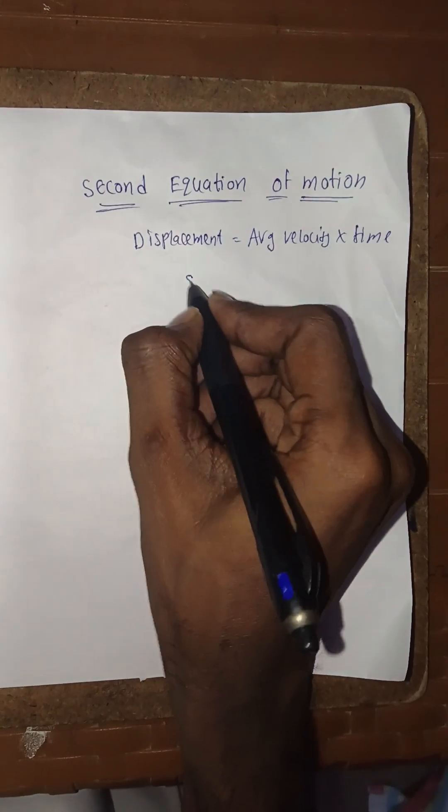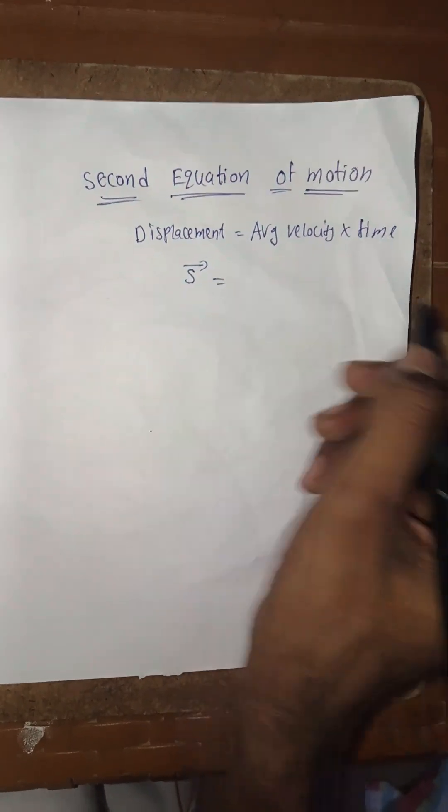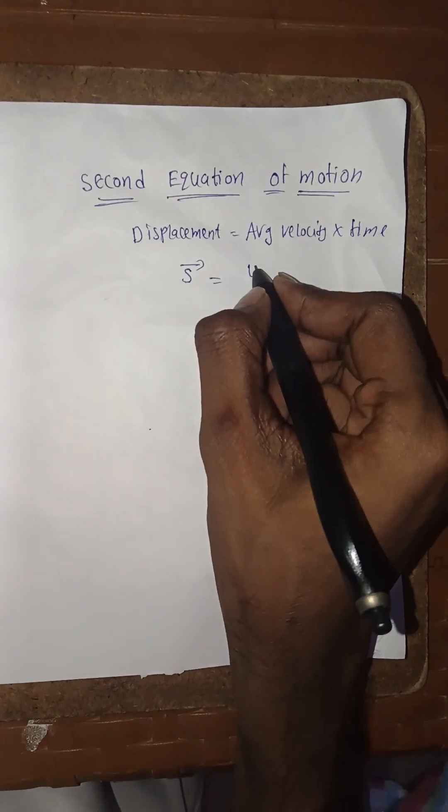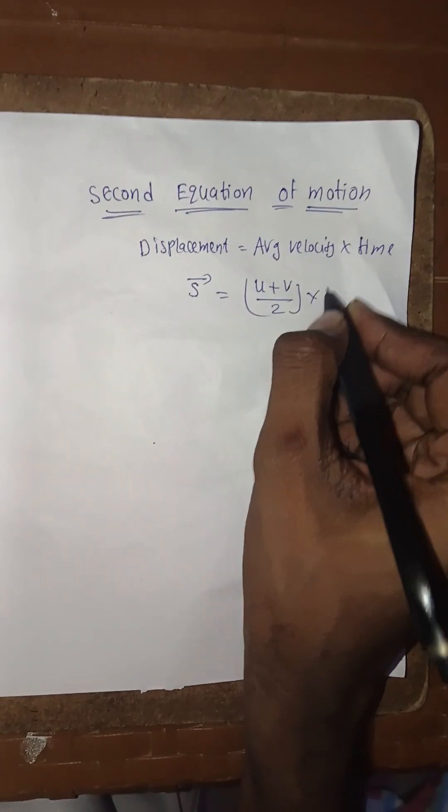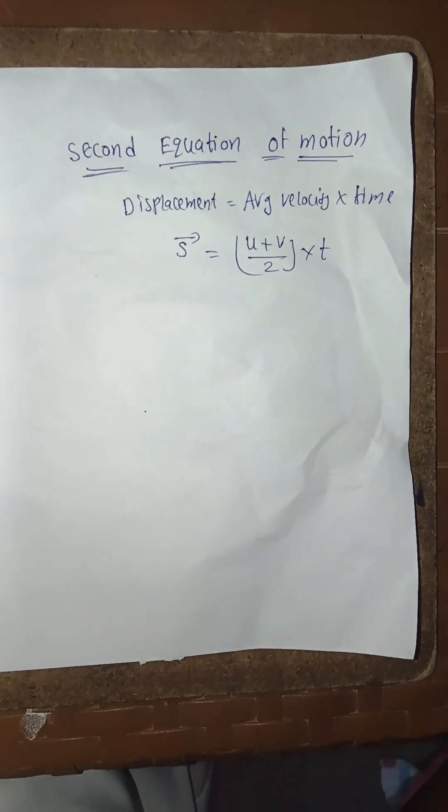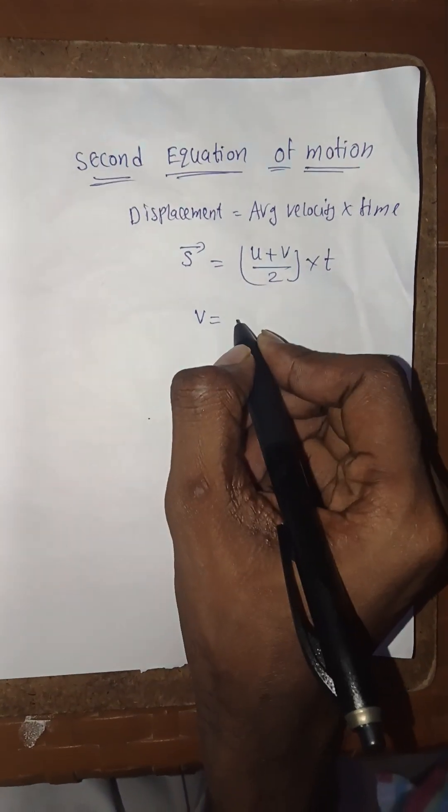Displacement is represented by the letter s. Average velocity is (u + v)/2 times t, where u is initial velocity and v is final velocity. We also know from the first equation of motion that v = u + at.